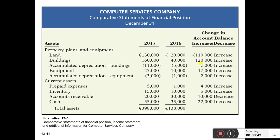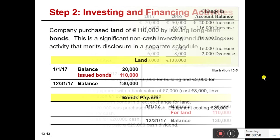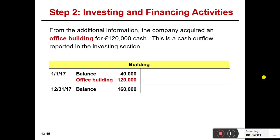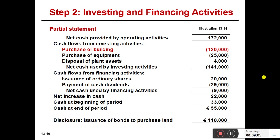If you apply the rule of thumb: an increase in assets is a debit change, so it is an outflow. The 120,000 increase shown in the additional information tallies with the balance sheet — well and good, you get confirmation. Otherwise, the ledger account you prepared will give you more information. So this is how we move forward with the building asset — purchase of building: 120,000.